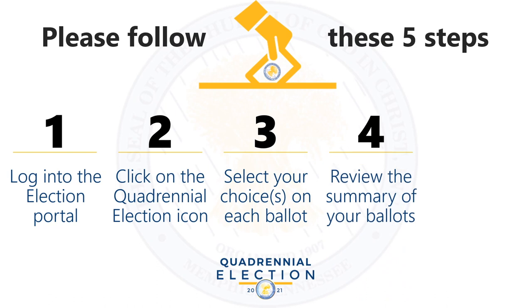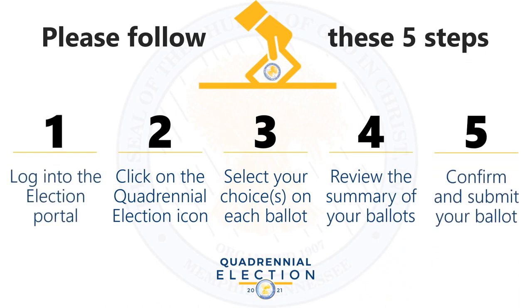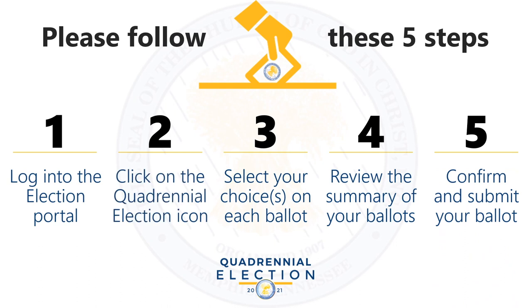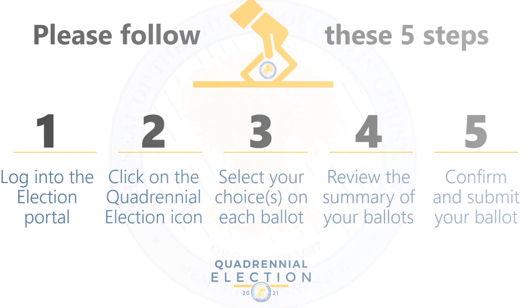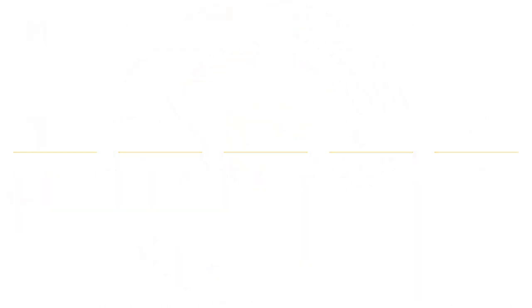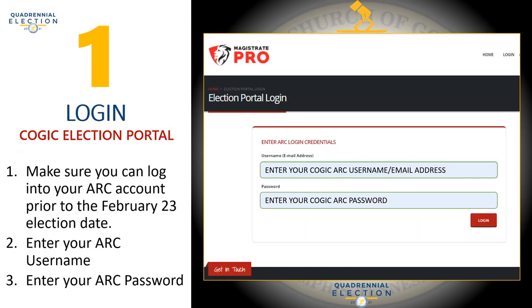Step four: review the summary of your ballots. Step five: confirm and submit your ballot. Step one — log into the COGIC Election Portal.